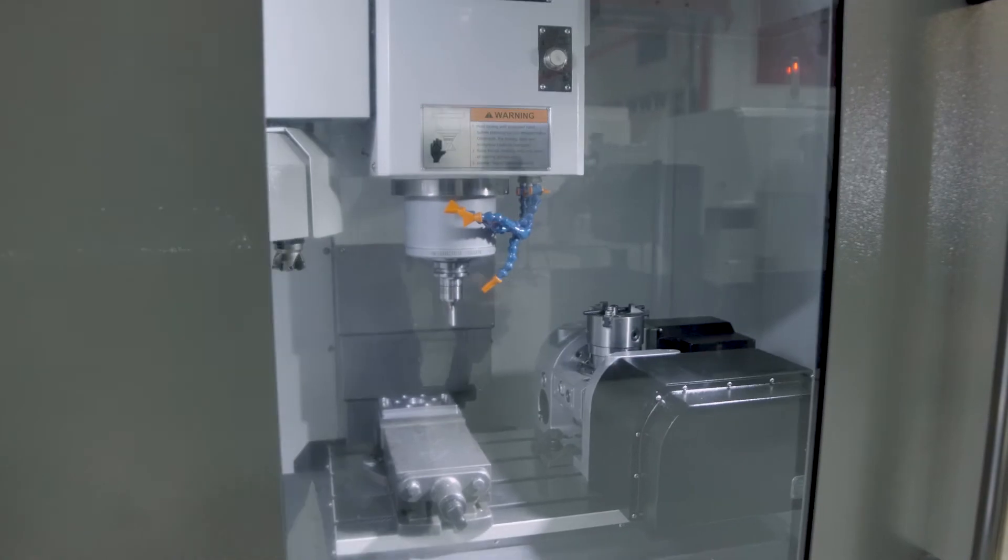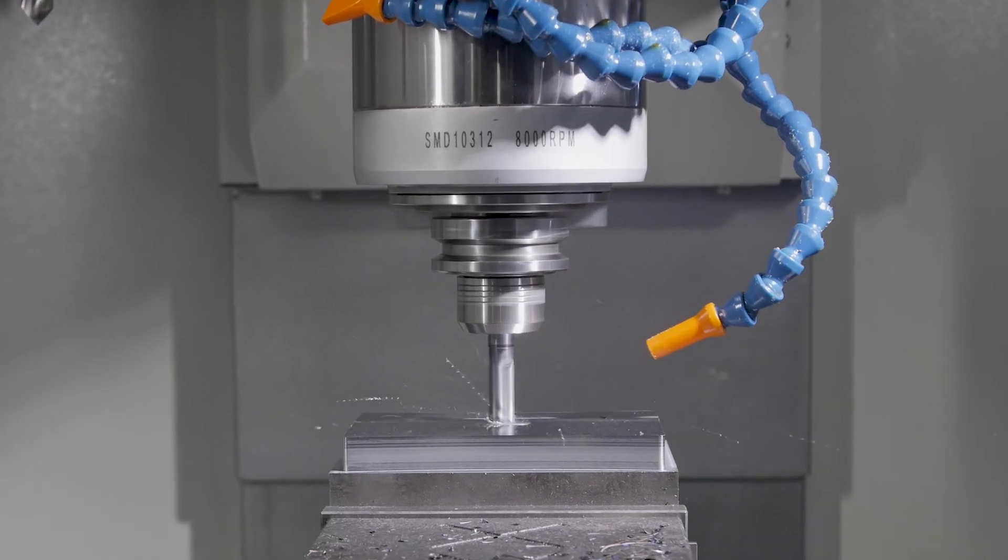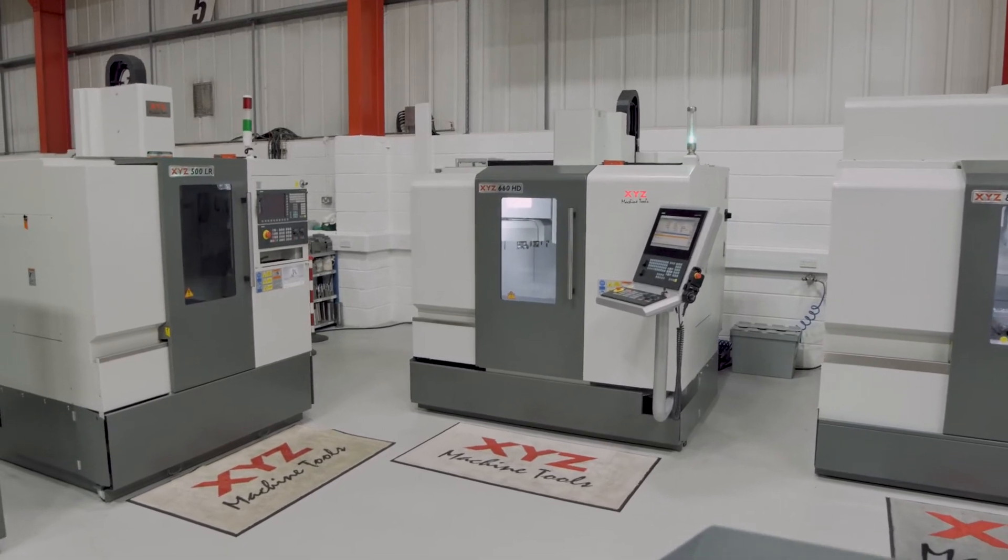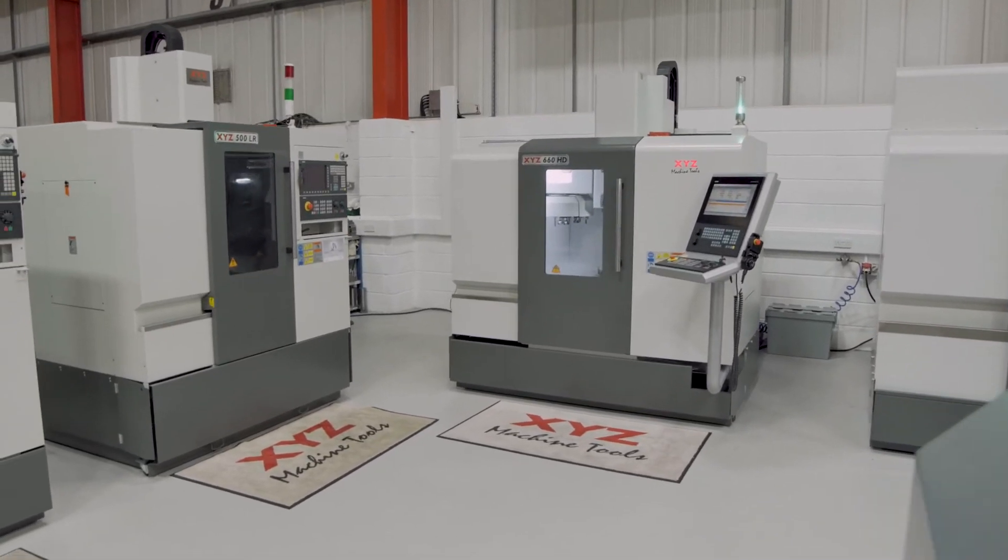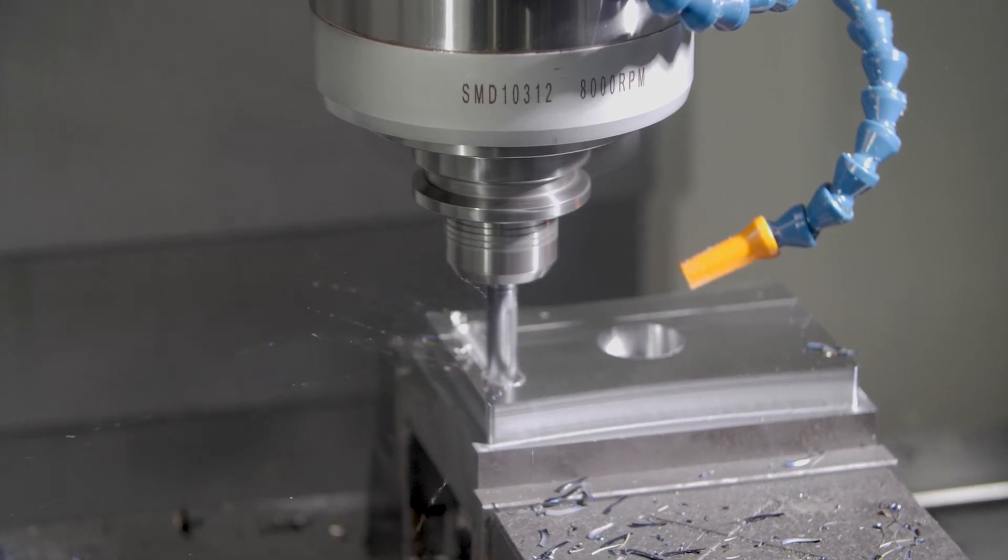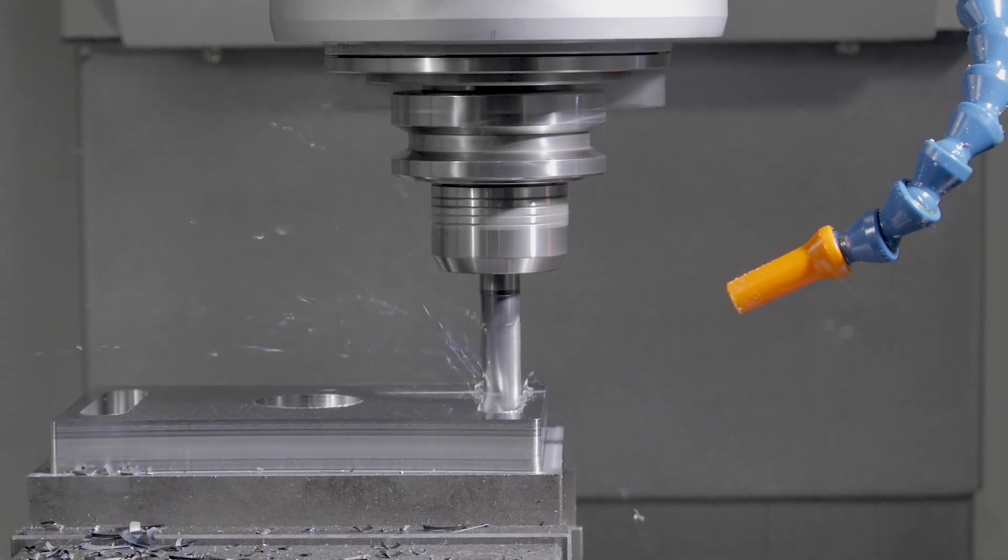The 660 HD is the smallest machine in the range with a footprint of only 2 meters by 2.1 meters, and axis travels of 660 millimeters by 450 millimeters by 500 millimeters in X, Y, and Z.